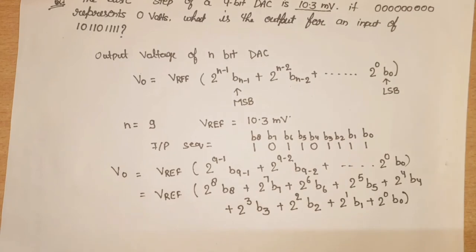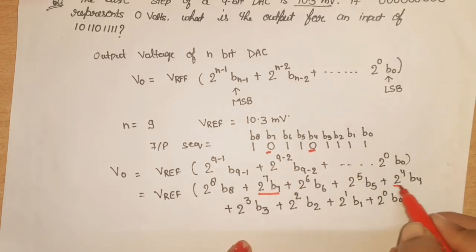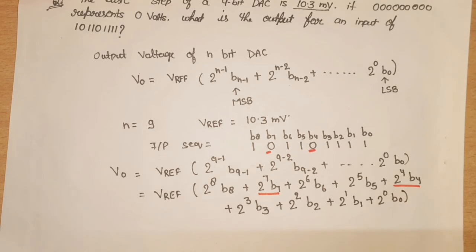All values will be there. Now wherever the value of b is 1, we will calculate that. Where it is 0, those terms will become 0. In this, the terms we have here, in this sequence b4's value is 0, b7 is 0, means this will be equal to 0 and this will be equal to 0.